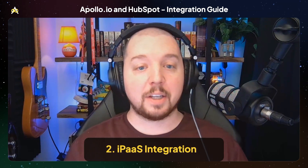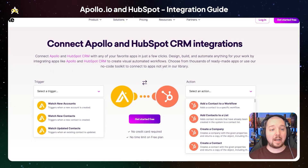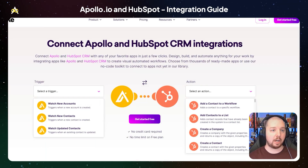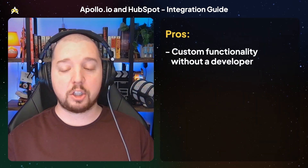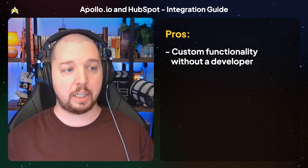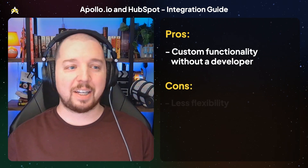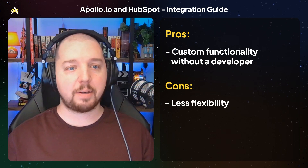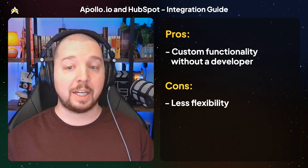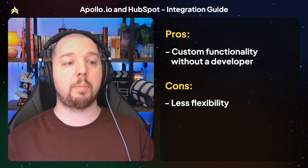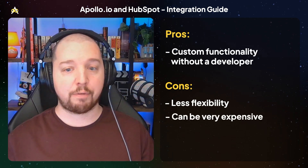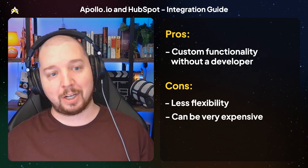The next option is an iPaaS integration. iPaaS platforms like Make, Workato, or Zapier offer pre-built connectors and integration apps for Apollo and HubSpot, which can simplify the integration process. You can set up custom functionality without the use of a developer, but the downside is it's a little less flexible than a custom integration. Depending on the volume of data and the complexity of the workflows you're building, costs can vary from a little bit to very expensive.